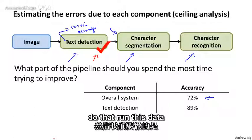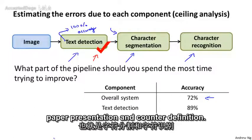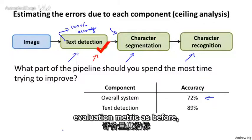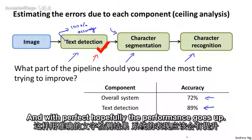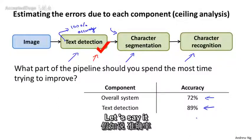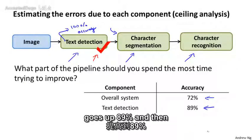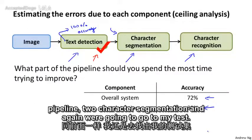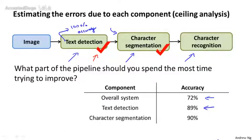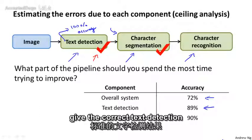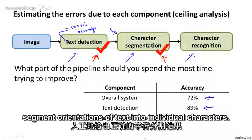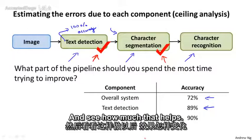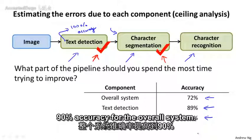We then run this data through the rest of the pipeline — through character segmentation and character recognition — and use the same evaluation metric to measure overall accuracy. With perfect text detection, performance goes up, and in this example let's say it goes up to 89%. Next, we go to character segmentation. We give it the correct text detection output and the correct character segmentation output — manually labeling the correct segmentations of text into individual characters — and see how much that helps. Let's say it goes up to 90% overall accuracy.